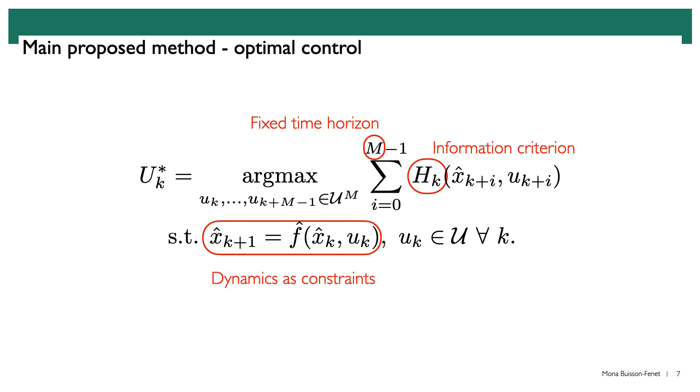So solving this means finding a control trajectory that maximizes the accumulated information over a feasible trajectory in state space. And if we don't end up exactly where we had planned, because our dynamics model is uncertain, that's fine, we still get a lot of information along the way.